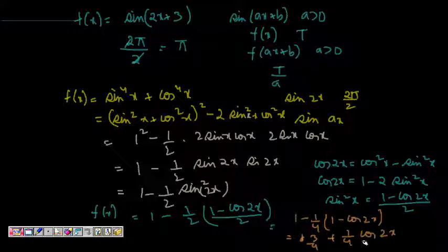So now, if fx is there, the period is t, then a of fx again, it will be period t because a just multiplies the value and does nothing. So period wise, it will not change. And this fx plus some constant, the period will also be t.